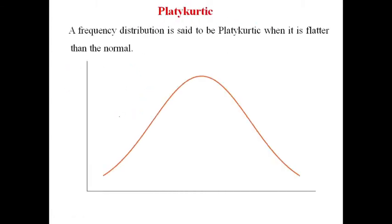Platycurtic: a frequency distribution is said to be platycurtic when it is flatter than the normal curve. We have seen the normal curve — it is a symmetrical curve, neither more peaked nor more flattened. When the curve is flattened compared to normal, we call it a platycurtic curve. It is flatter as compared to the normal.